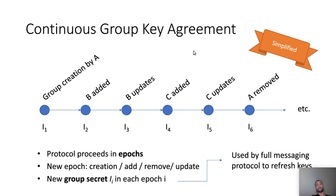For instance, consider this example. We have group creation by party A and we're in epoch number one with group secret I1. Then B is added and we move to epoch number two with a new group secret. Then B updates, C is added, C updates and A is removed. The group secrets are used by the full messaging high-level protocol to refresh keys.